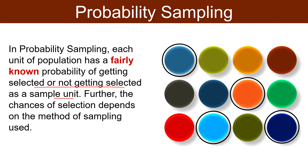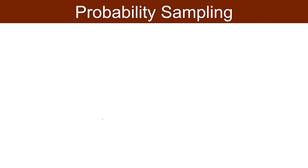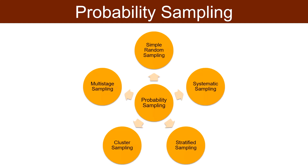The chances of selection depend on the method of sampling used. Coming to the methods of probability sampling: Simple random sampling — each and every element of the population has an equal chance of getting included in the sample, and so each one has the same probability of being selected. Systematic sampling involves listing of elements, and then every nth element of the list is picked up for inclusion in the sample.